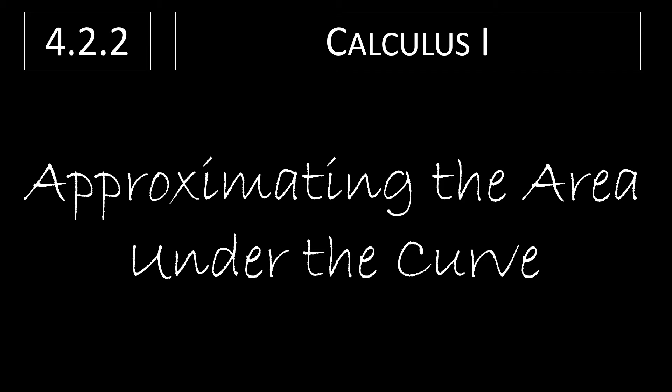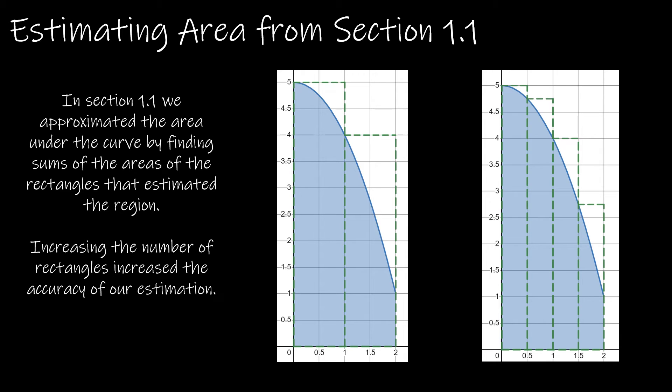In this video, we're going to take a look at how to approximate the area under the curve until we can get to the point where we're actually finding the area under a curve. If you'll recall, way back in section 1.1, when we first started our study of calculus, we said there were two main problems: the first was the slope of a tangent line, which we spent a lot of time on through chapters 1 through 3. Now we're moving on to that second big problem, which was the area under the curve.